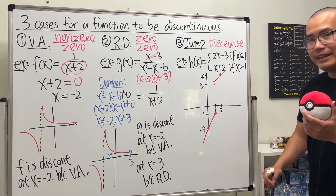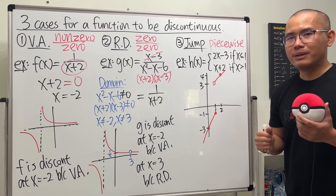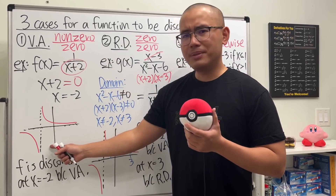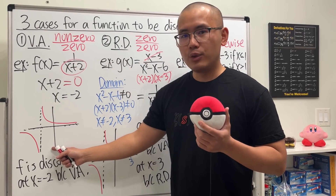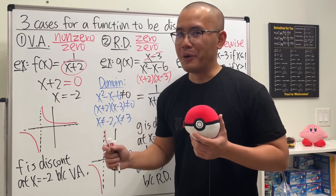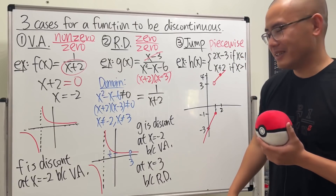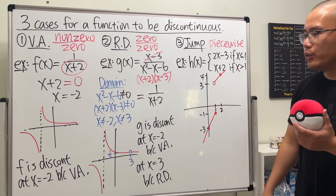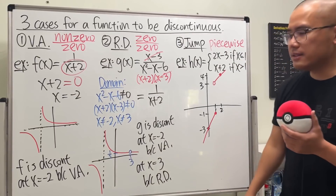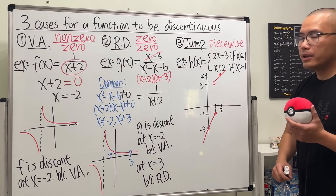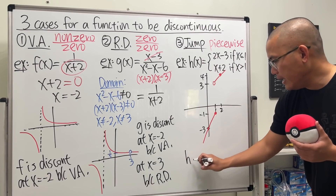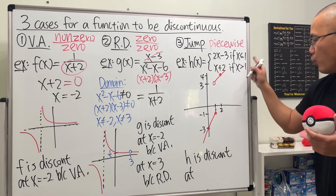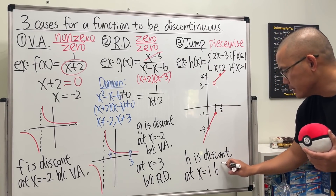As we can see, there is a jump from the closed circle at negative one to the open circle at three — just like in Super Mario. You might wonder: isn't the vertical asymptote case also a jump? Well, imagine playing Super Mario — can you jump from negative infinity to positive infinity? No. For a jump discontinuity, both ends must be finite. Infinite ends define a vertical asymptote. So h is discontinuous at x equal to one because there is a jump.